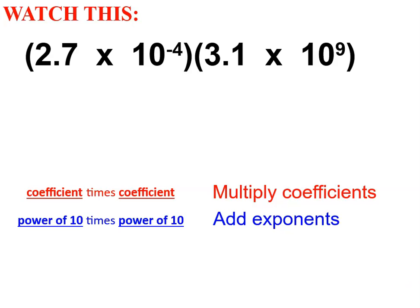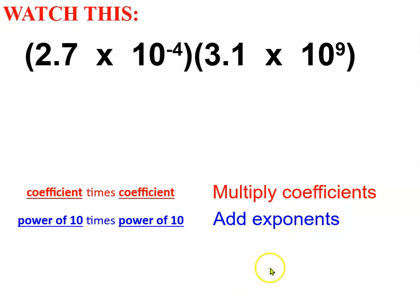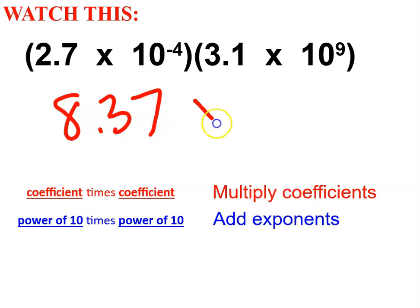How about this one? 2.7 times 3.1. Let's use the Desmos calculator. 2.7 times 3.1. 8.37. The times sign is always there. The 10 is always there.